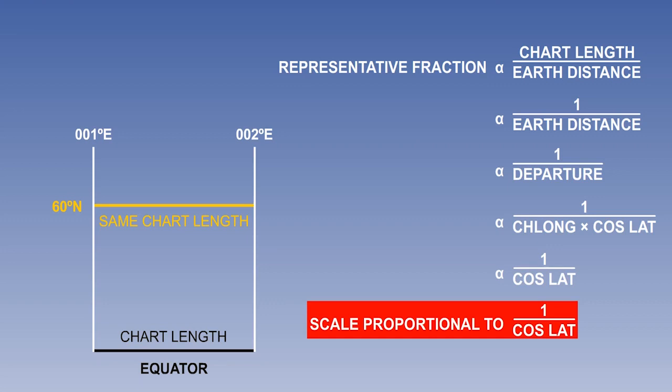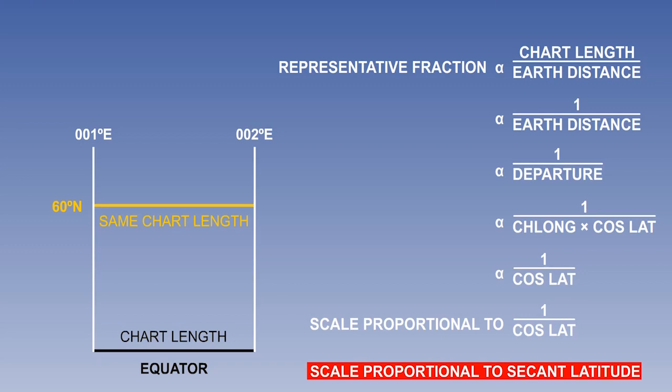There is a mathematical term for 1 over cosine. It's called the secant. To give an example, the secant of 60 degrees is 1 over the cosine of 60 degrees. The cosine of 60 degrees is a half, so the secant of 60 degrees is 2. Therefore, the east-west scale on any cylindrical chart changes as the secant of the latitude.